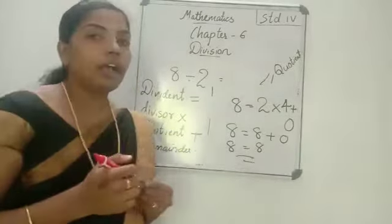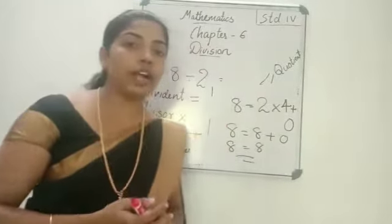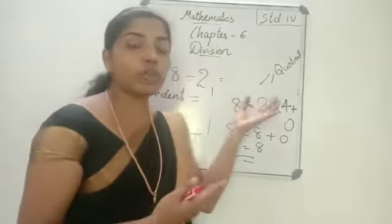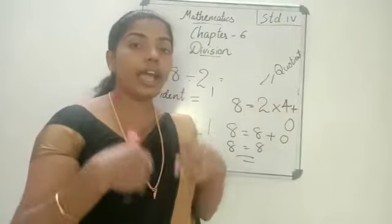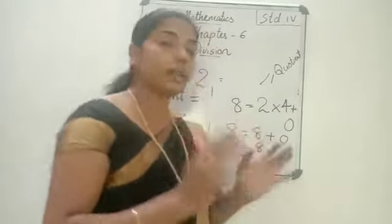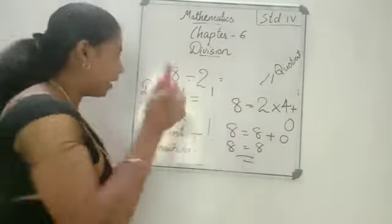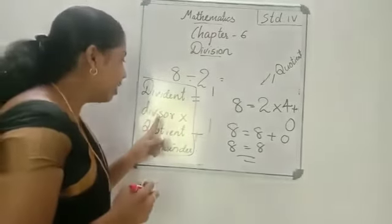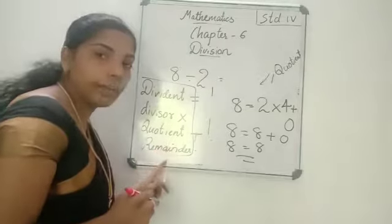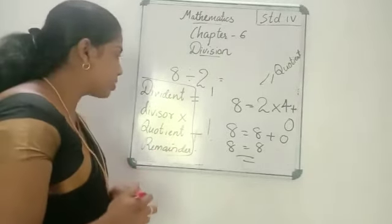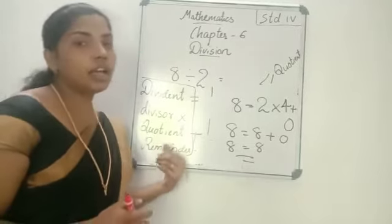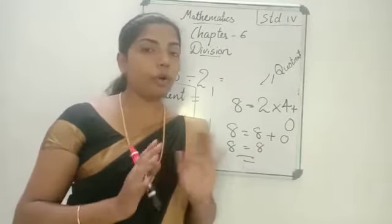So the number which we have to divide is called the dividend. With which number we are dividing is called divisor. The answer we are getting is called quotient, and the remaining is remainder. So you have to by heart this relation. Dividend is equal to divisor into quotient plus remainder. Second form: Dividend is equal to divisor into quotient plus remainder. Okay? I hope all of you understood.